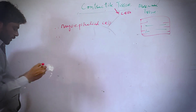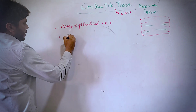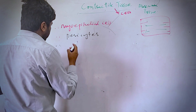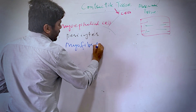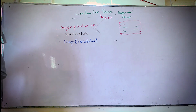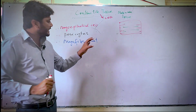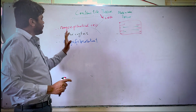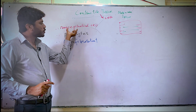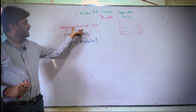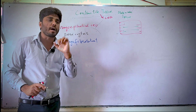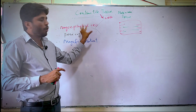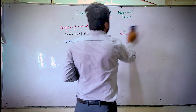Number one is the myoepithelial cell. Number two is the pericyte. Number three is the myofibroblast. These are actually combination cells. Just look at the name: 'myo' means muscle, 'epithelial' means epithelial tissue — so a myoepithelial cell is a cell which has both the properties of muscle tissue and properties of epithelial tissue.